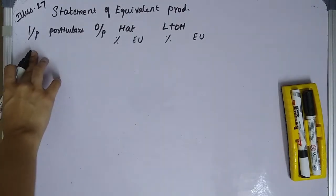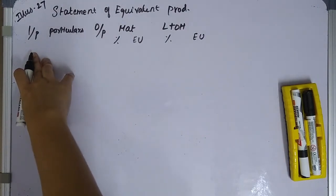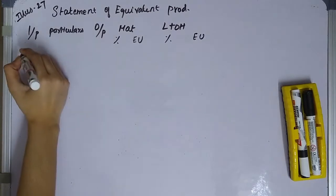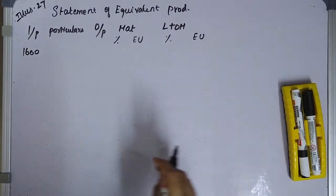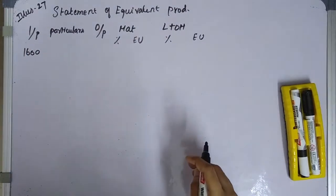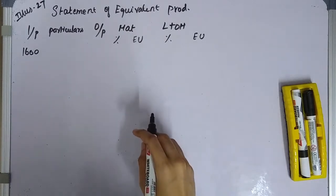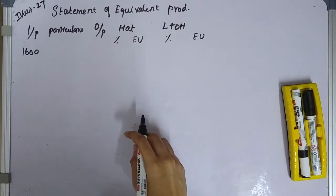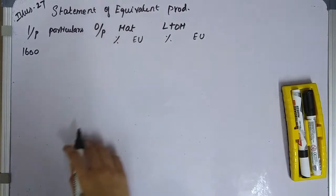On the input side: first, opening stock is 1,600 units. Next, transfer from Process 1 is 10,200 units.